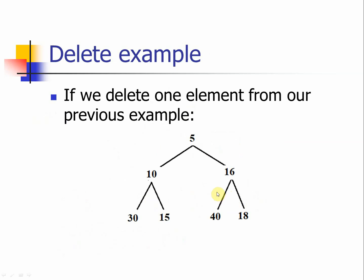Let's look at another example. This is the binary heap built through inserting elements one by one in our previous example. If we want to delete the root, 5 is removed. We need to put 18 at index 1 and then compare with the two children. To find the left child index, multiply the index by 2; for the right child, multiply the index by 2 plus 1. We compare the two values, understanding that 18 needs to be swapped with the smaller one, so 10 goes up — which is the next smallest item.